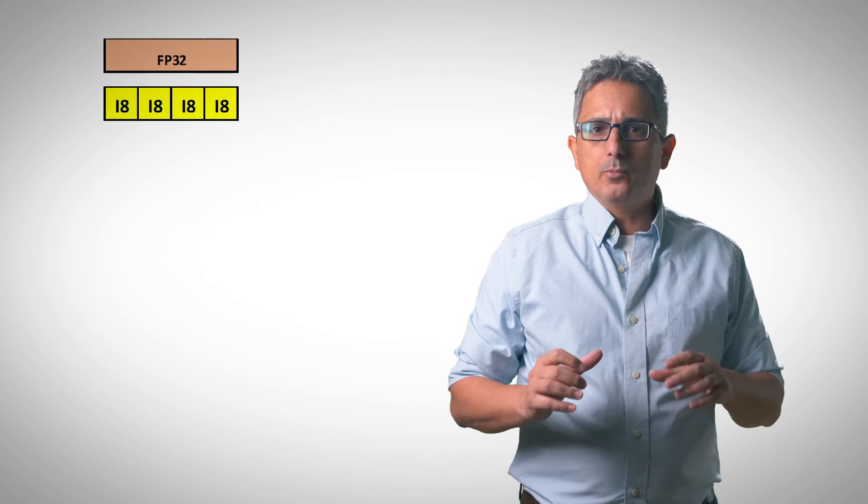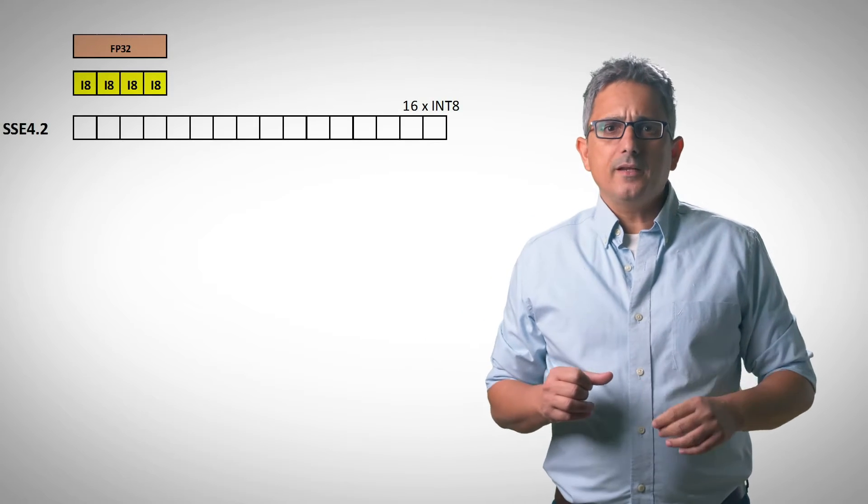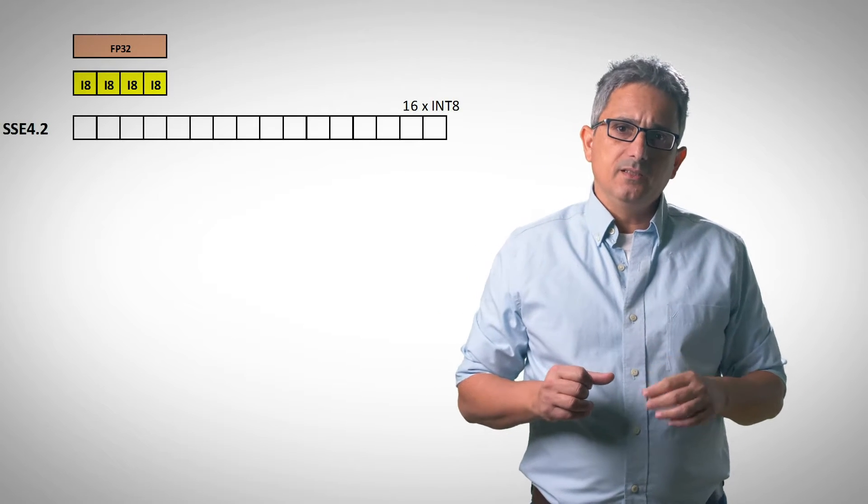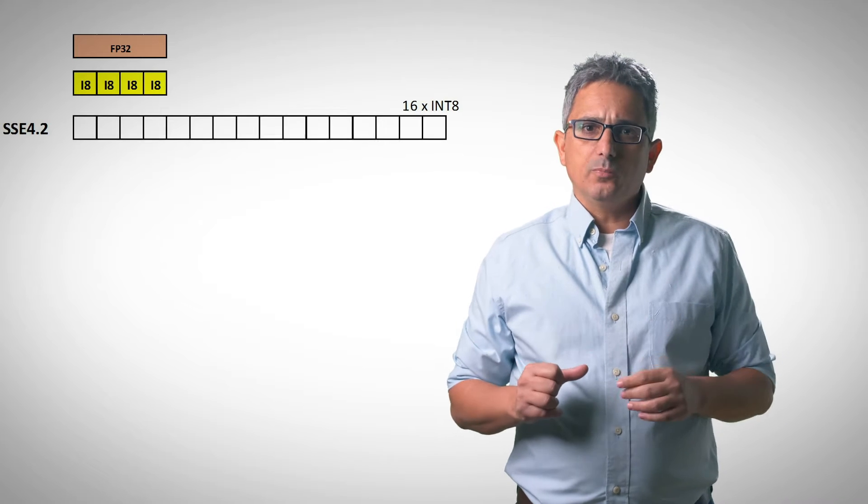First benefit is obvious, we can squeeze 4 int 8 into a 1 floating point 32. So model weights and memory bandwidths required are smaller. In addition, we are getting the acceleration of SIMD, single instruction multiple data operations.